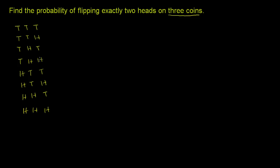So there are one, two, three, four, five, six, seven, eight possible outcomes. Eight possible outcomes.